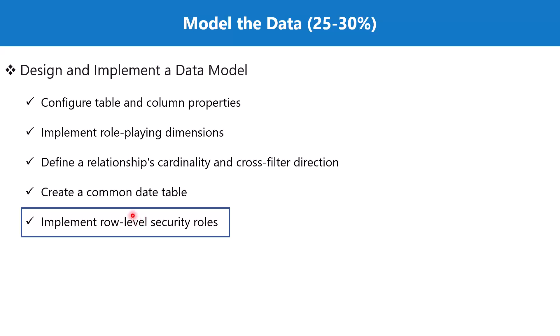This is a topic that has been pending from the second learning path, and I intentionally left it out because it is implemented in the desktop environment, while the role assignment is done in the Power BI service. Row level security is done in two parts — part of it is done in the desktop environment and part in the Power BI service. In this video we'll cover the desktop portion, and take it to the service environment in the next video.